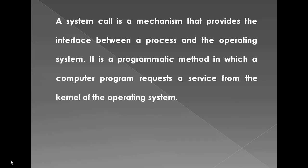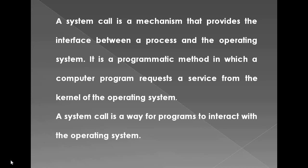A system call is a mechanism that provides the interface between a process and the operating system. It is a programmatic method in which a computer program requests a service from the kernel of the operating system. The kernel is nothing but the programs of the operating system. System calls offer the services of the operating system to user programs through API — application programming interface. A system call is a way for programs to interact with the operating system.